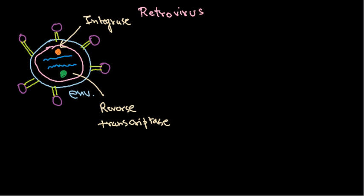They also have another enzyme — protease. Protease can degrade protein molecules, and this protease is required to produce the structural and capsid proteins for retroviruses. So this is the overall structure of the retrovirus, with the outer membrane glycoproteins being GP-type proteins.